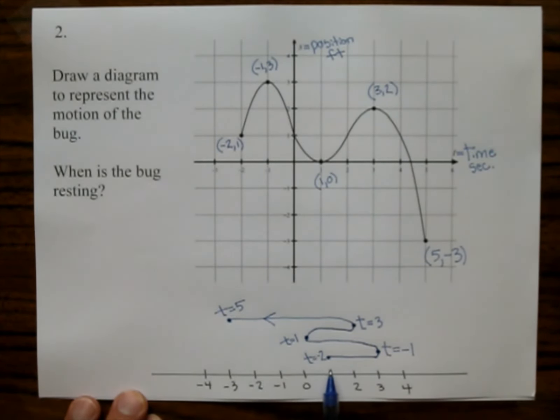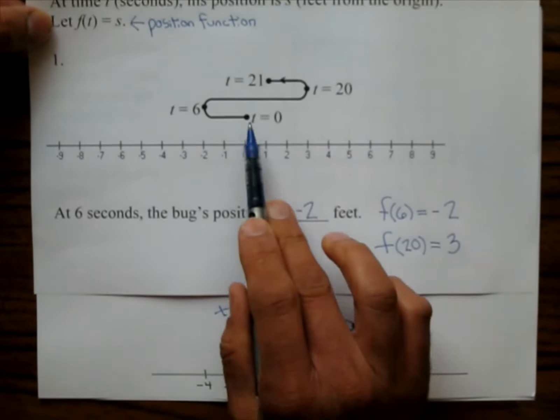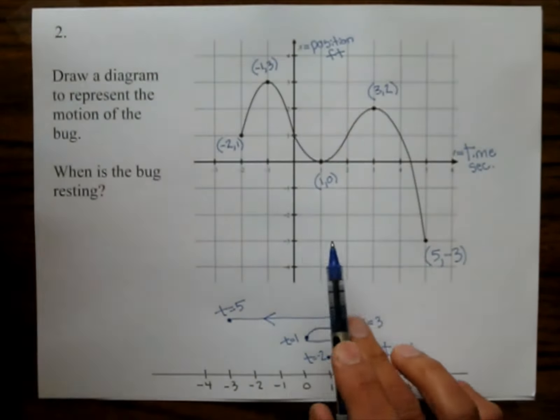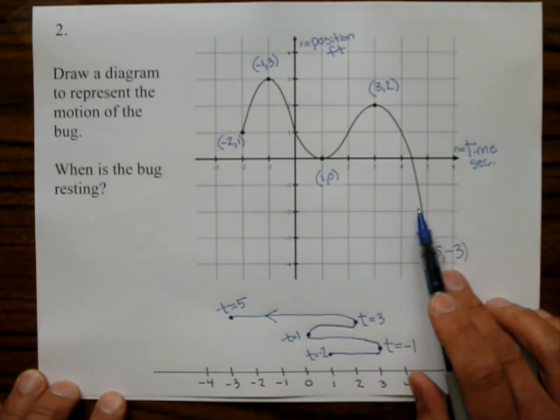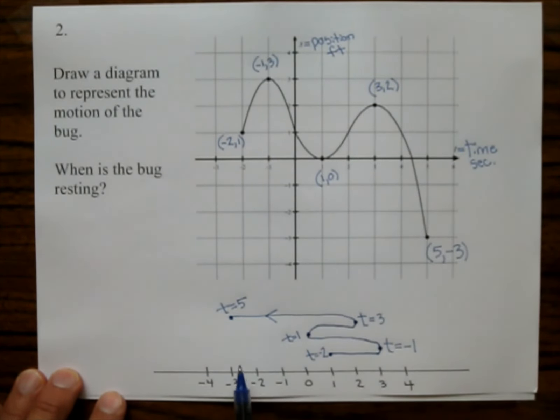And so there's his travels right there. It starts off at negative 2. And here's negative 1 seconds. And then here's 1 second. And here's 3 seconds. And here's 5 seconds. And so this is the bug diagram that's similar to the one that we saw here. So we were given this and we were asked a question. And now we're given the graph of the position function where the x-axis is time and the y-axis is position. And we're asked to draw the diagram.